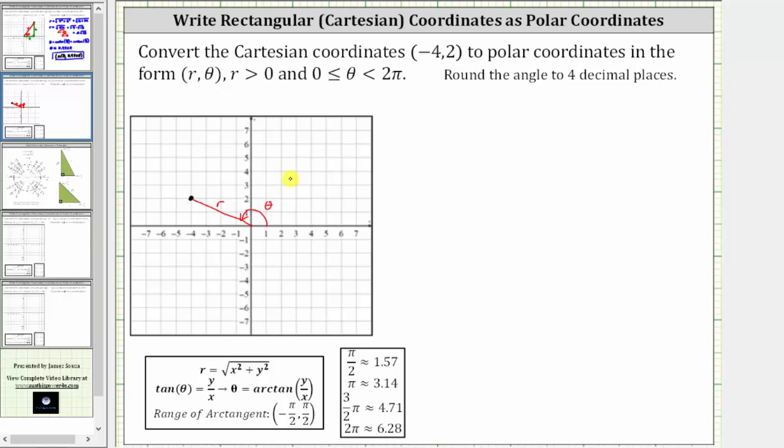Now to help us find r and theta, let's sketch the reference triangle in the second quadrant where r would be the hypotenuse. Because x is negative four, let's label this leg negative four. And because y is two, let's label this leg two.